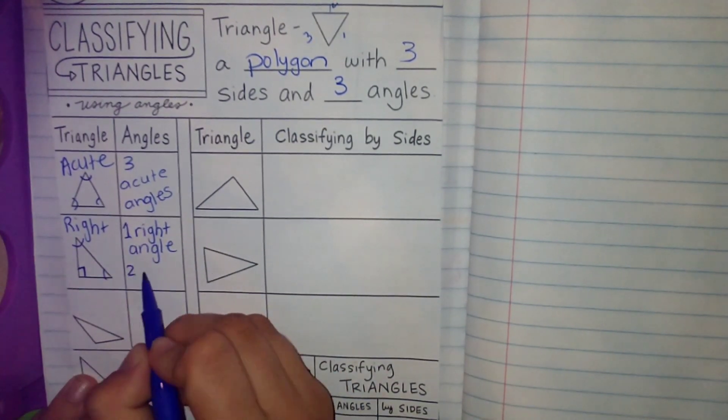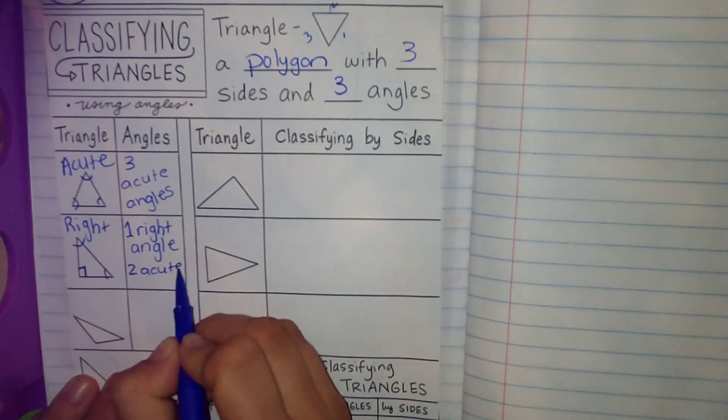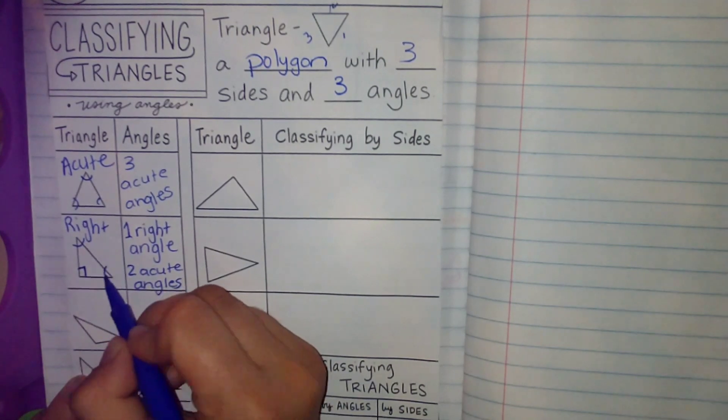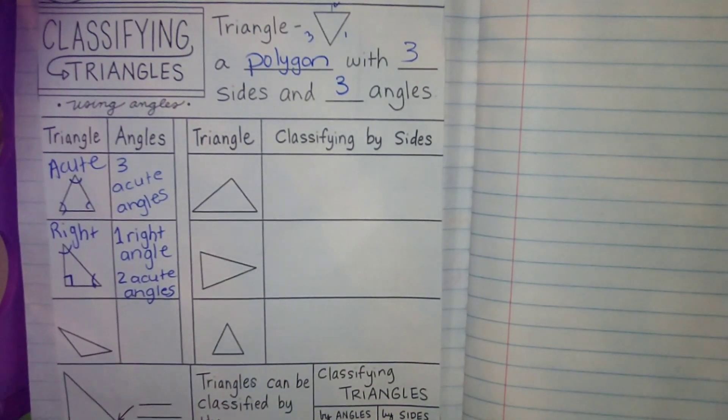We also have two acute angles, which I'm marking like this. So we have acute and we have right.